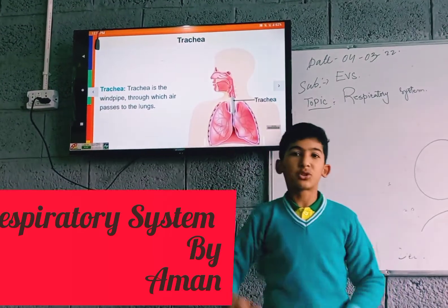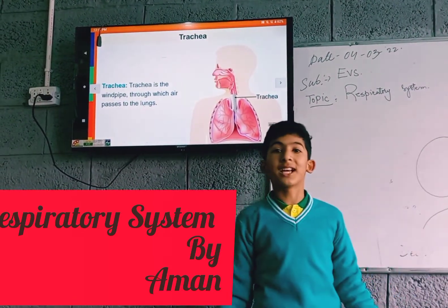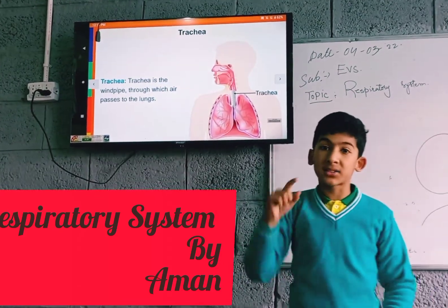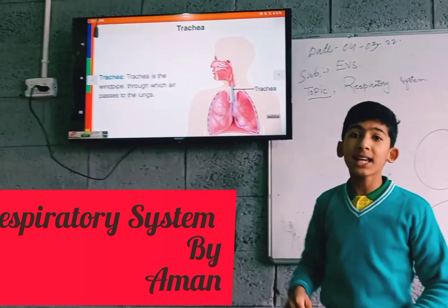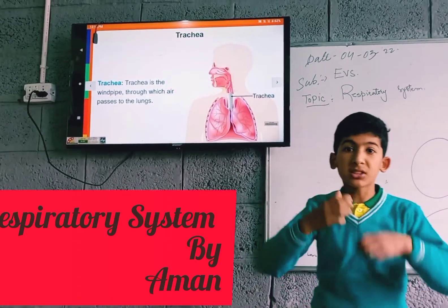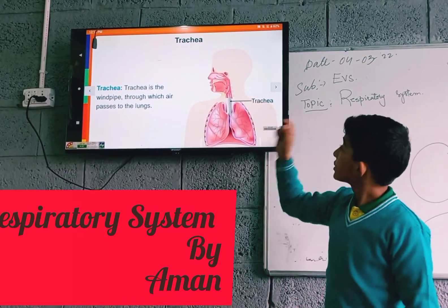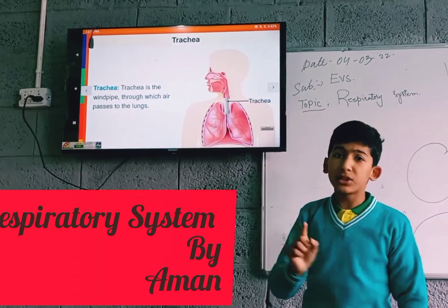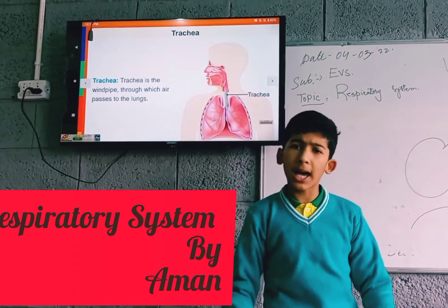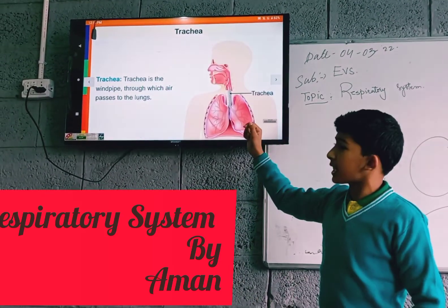After the pharynx comes the trachea. The trachea is also known in English as the windpipe. It is the tube through which air travels into the lungs. Air passes through the trachea — the windpipe — and goes into the lungs. Without the trachea, no air would pass into the lungs.